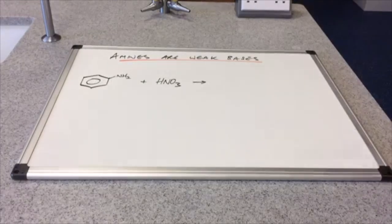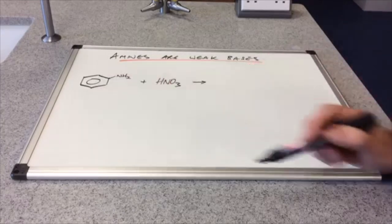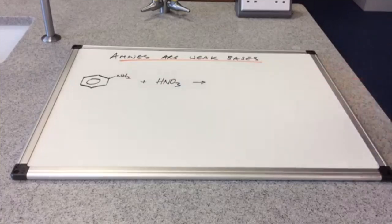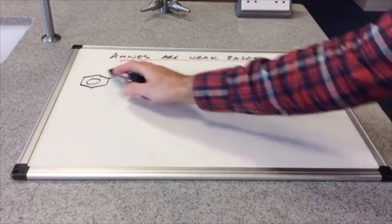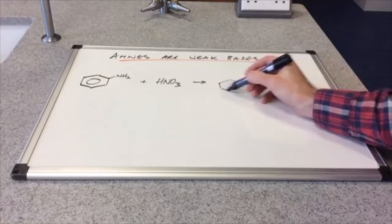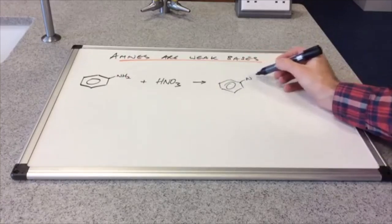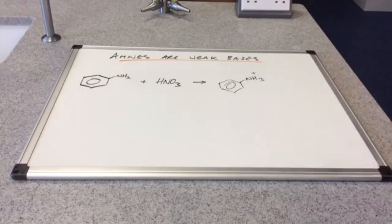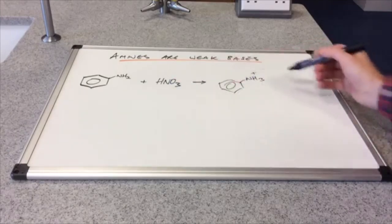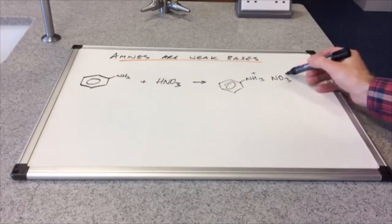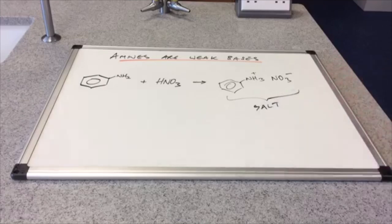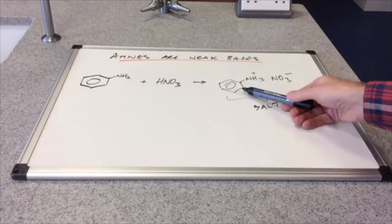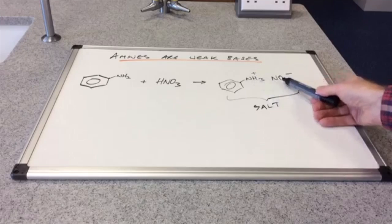We look at an aromatic amine now. So we've got phenyl amine, and we're reacting that with nitric acid. Exactly the same thing is going to happen. The H-plus from the acid is going to end up on here and form an ammonium ion. So it's going to be NH3+. And what's left of the acid is the NO3- ion. So there's your salt. We've got phenyl ammonium nitrate.